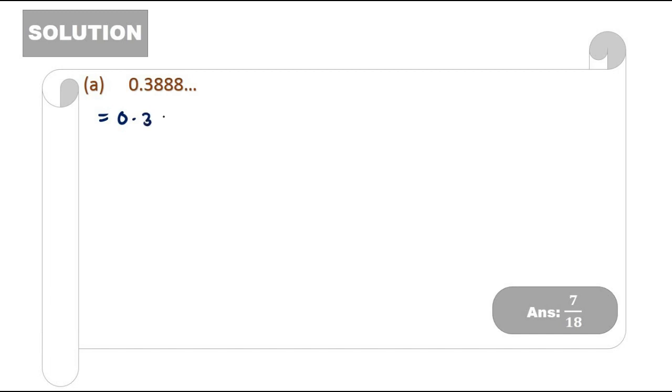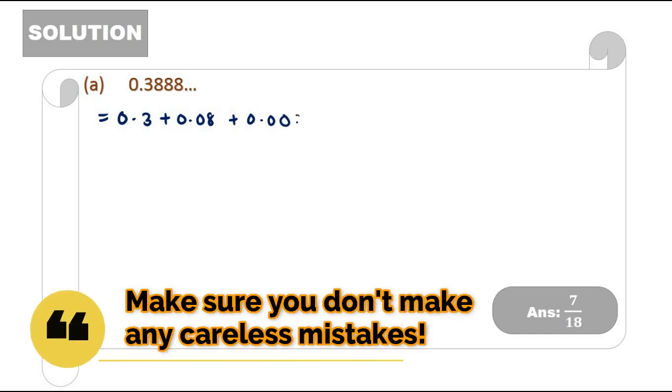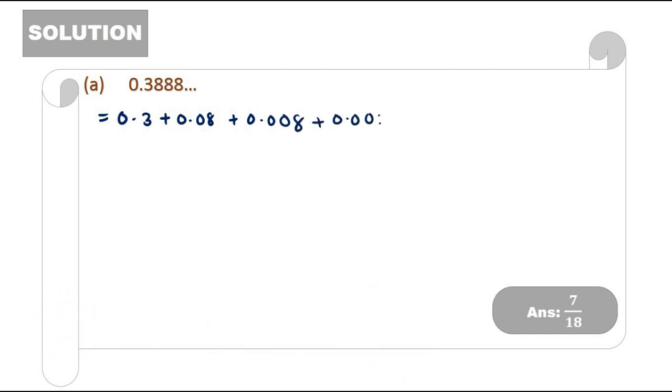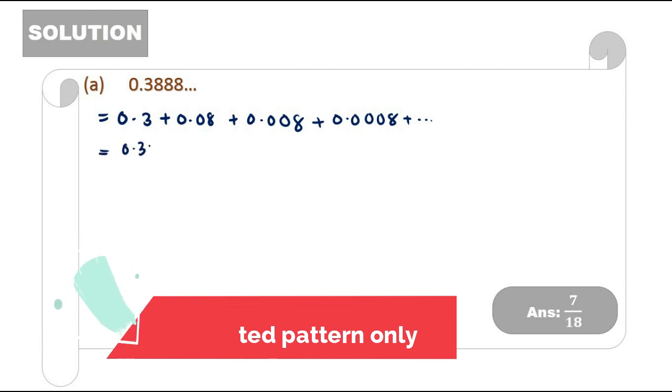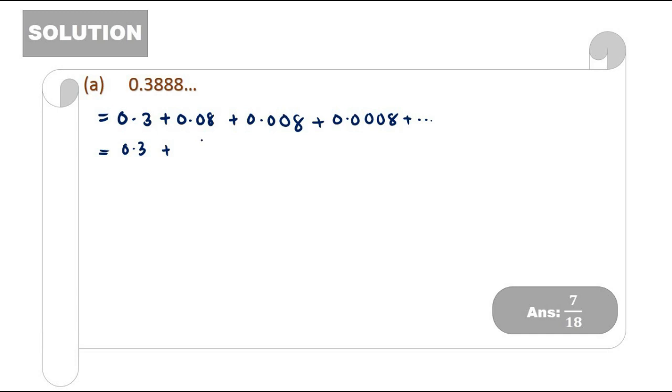So how to express that into an exact fractional form? For 0.3888, we have to separate them first. It's actually 0.3 plus 0.08 plus 0.008 plus 0.0008 and so on. 0.3 can remain there. Meanwhile, please note that here you got a common pattern where the 0.08 plus 0.008 plus 0.0008 and so on follows the GP already - the geometric progression.